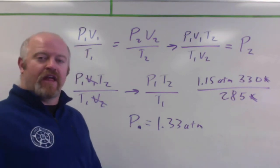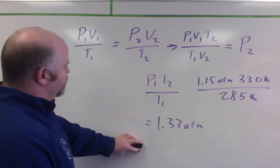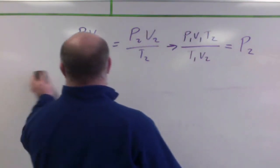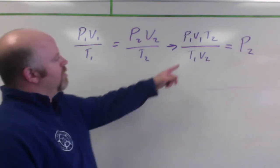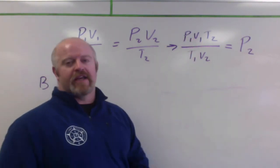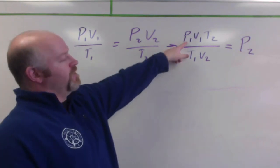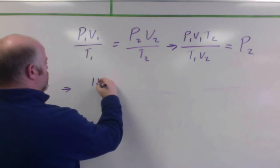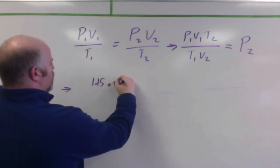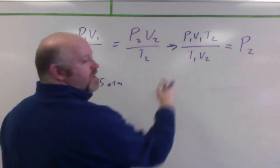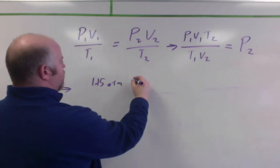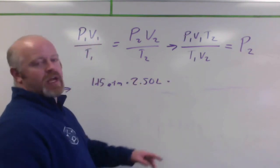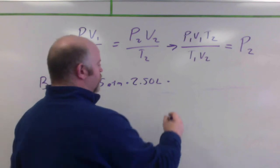Now can B can flex. So for can B, the volume is going to change, so I can't cancel out volume in this scenario. So our pressure initial stays the same, so I still have 1.15 atmospheres. My initial volume is 2.5 liters times my ending temperature, which is 330 Kelvin.